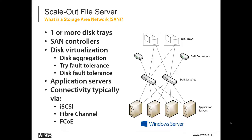A SAN has one or more disk trays with individual disks. The intelligence of a SAN is provided by specialized servers called SAN controllers, which use disk virtualization to aggregate the disks together. When we create a LUN, it resides across disks in those pools — that's where we deploy disk fault tolerance. Application servers — whether SQL servers, Oracle servers, Hyper-V hosts, or others — connect to those SAN controllers using switches and a protocol such as iSCSI, Fibre Channel, FCOE, or even SAS.